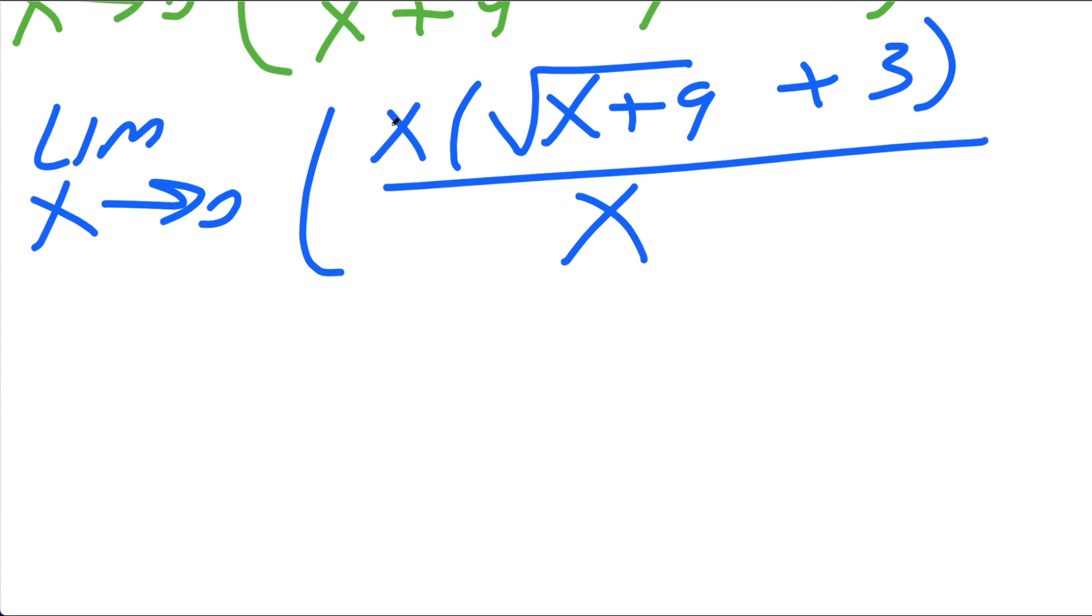At this point we notice something, the numerator has an x, the denominator has an x, and this whole thing has a parenthesis. Because of that, we get to cancel this x out. And so we get limit of x approaching 0, parenthesis, the square root of x plus 9, plus 3.